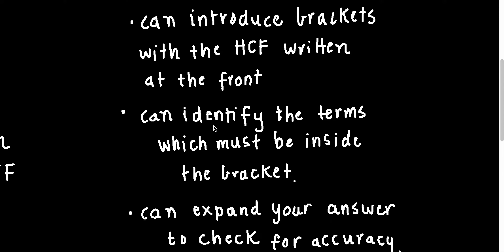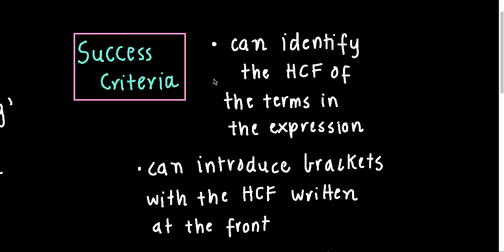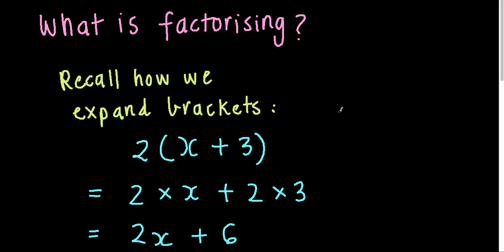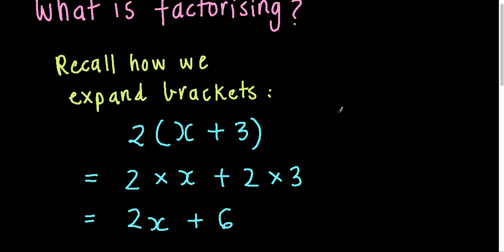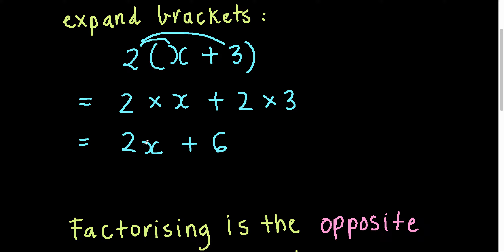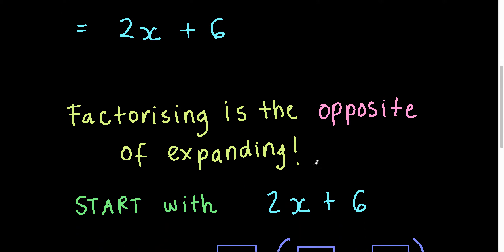So that basically breaks down factorizing into a few steps. If you are struggling, I want you to come back to these success criteria and use them as a step-by-step process. What I'm going to do is first take you through what factorizing is. I want you to recall back to when we did expanding. Here we have two lots of x plus 3. When we expand this, we do 2 times x and 2 times 3, which gives us 2x plus 6. Factorizing is actually the opposite process of expanding.